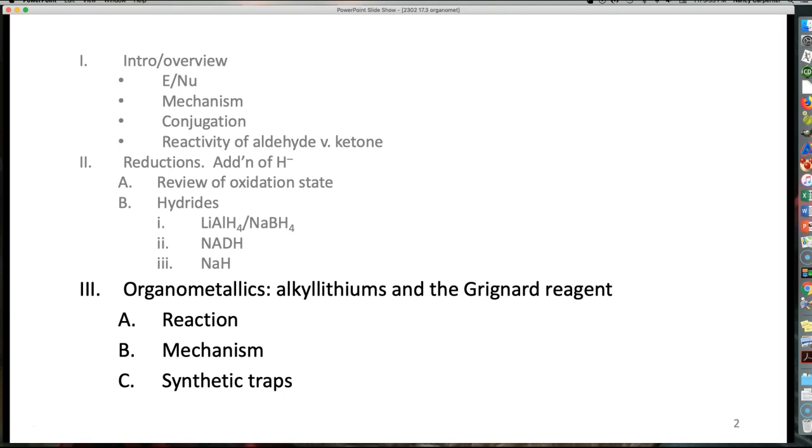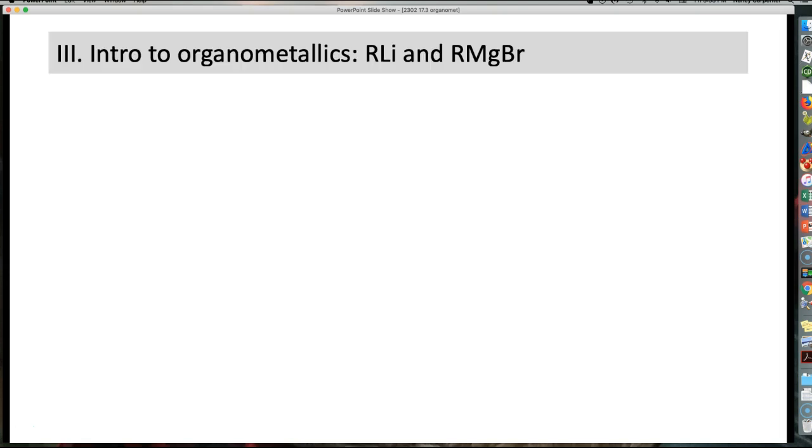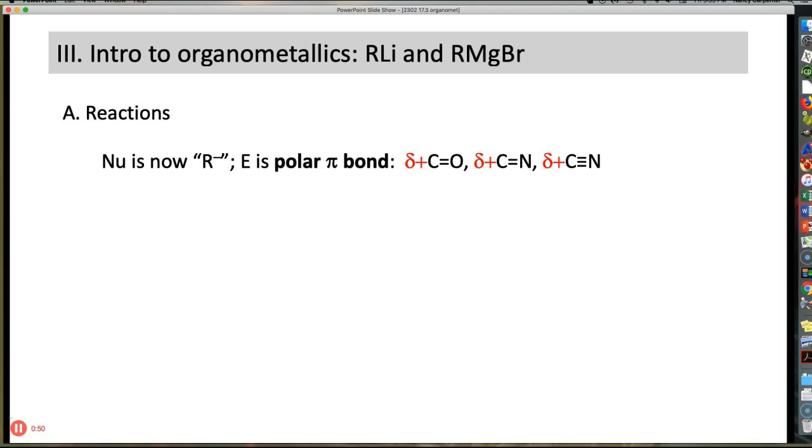Now we look at a different nucleophile: alkyllithiums and Grignard reagents. These are the workhorses of organometallic chemistry at this level. The reactions they undergo are as nucleophiles, as you would expect. The only thing that's different is we're in Chapter 17, so the electrophile is our polar pi bond. And now in this mini-lecture, this is our nucleophile. Not H-, but R-, in other words, a carbanion.